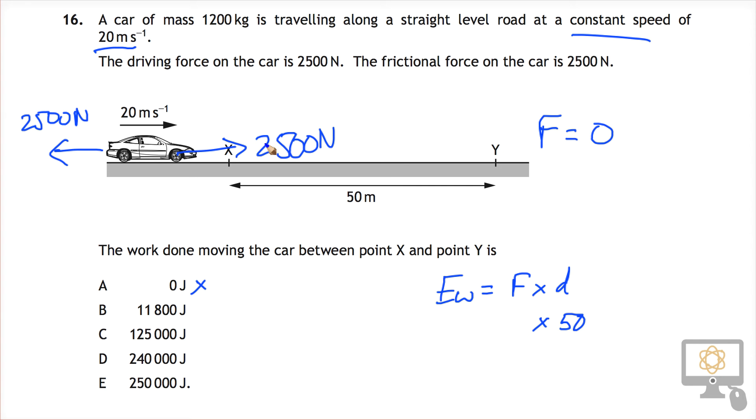So what do you do? Well, you have to understand that work done is work done against something, and the work has been done against the frictional forces. So in actual fact, because you're doing work against the frictional forces, the amount of force that you're applying is 2500 newtons. And so therefore, when you do that calculation, you get 125,000 joules, which is indeed in this case the correct answer.